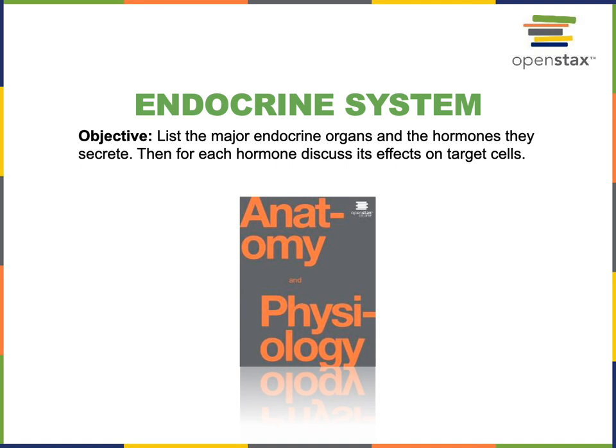This video will cover the fourth and final portion of the following objective from the endocrine system: list the major endocrine organs and the hormones they secrete, then for each hormone, discuss its effects on target cells.